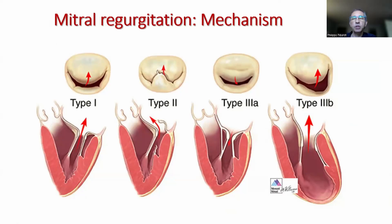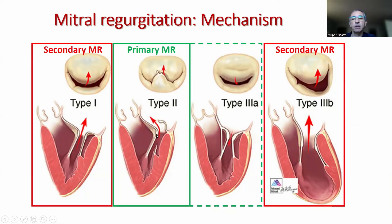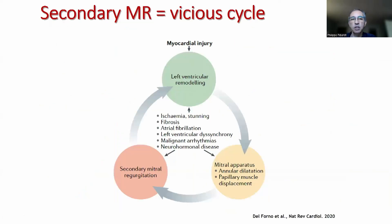We treat two types, two etiologies of MR: the primary MR, essentially type 2, where the mitral valve prolapses, and the secondary MR, especially type 3B, according to the Carpentier classification. Let's start with secondary MR, because maybe it's more challenging.